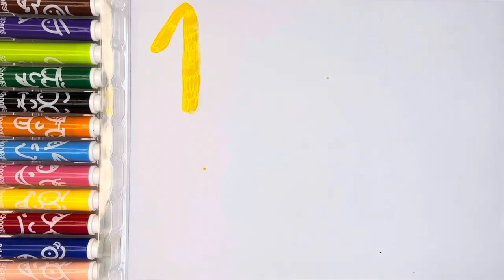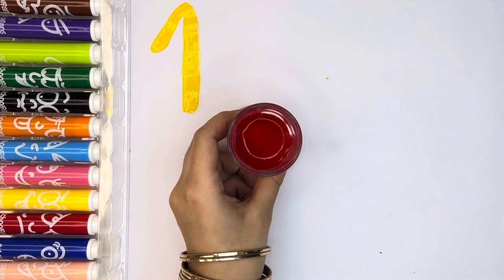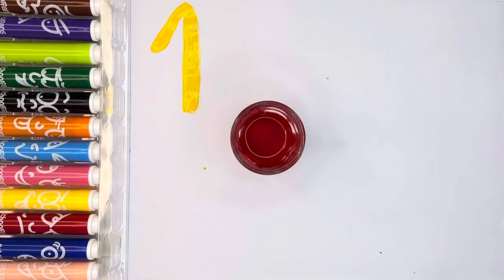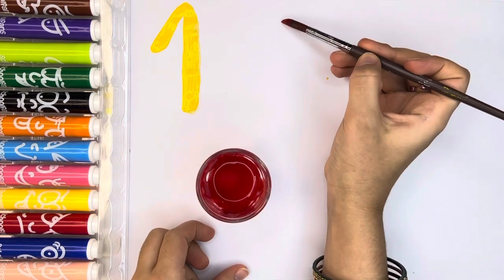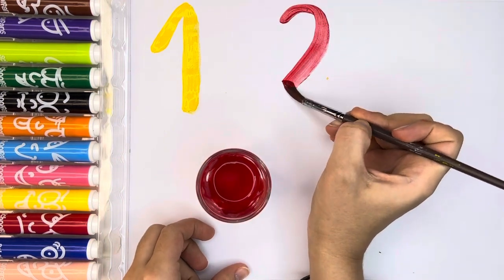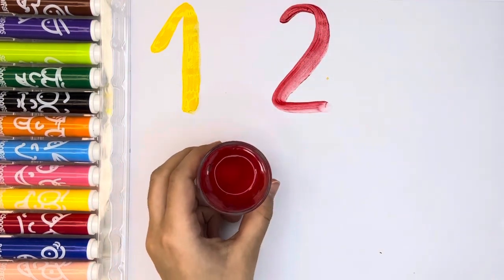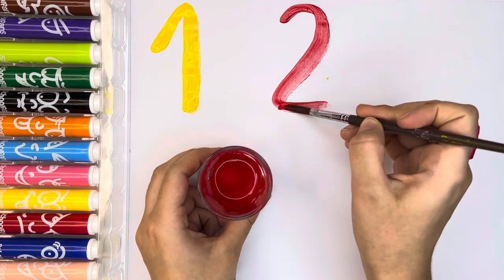And then, let's try number two. Number two. Let's write number two with red. I love red. We have red number two.